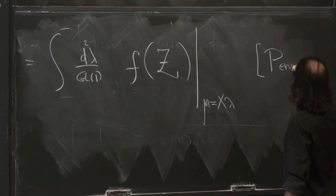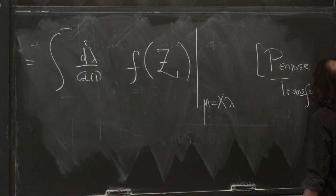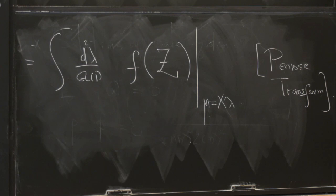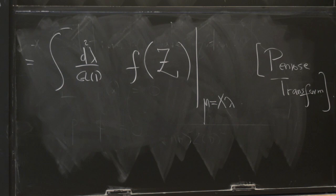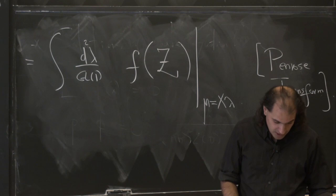Except the way we talked about things here with these very simple Fourier transforms — when does this make sense? It makes sense in 2,2 signature, because lambda-tilde is not the complex conjugate of lambda. In 2,2 signature, this is a totally straightforward thing to do — you literally Fourier transform, you go back and forth. The final formula you can actually interpret in any signature. Penrose originally was not thinking about 2,2. The fact that things are much easier to think about in 2,2 is one of the things that Witten did in his 2003 paper on this subject.